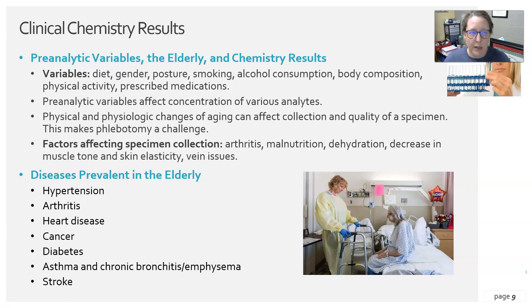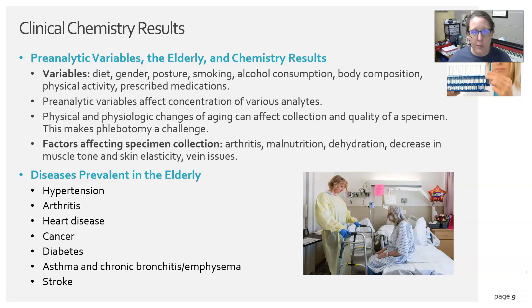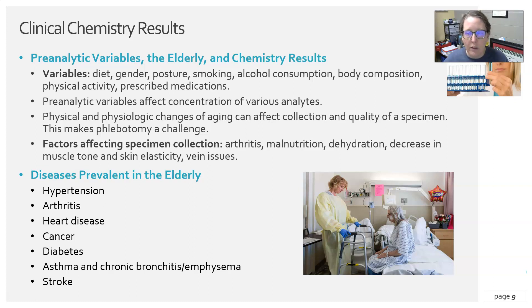Some preanalytical variables to consider for elderly patients and chemistry results include diet, gender, posture, whether they are sitting or bed-bound, smoking, alcohol consumption, body composition such as muscle mass and fat mass, physical activity, and prescribed medications — all of which can affect clinical chemistry results. There is a variety of analytes that can be affected, and each must be considered individually. Physical and physiological changes of aging can also affect specimen collection quality.